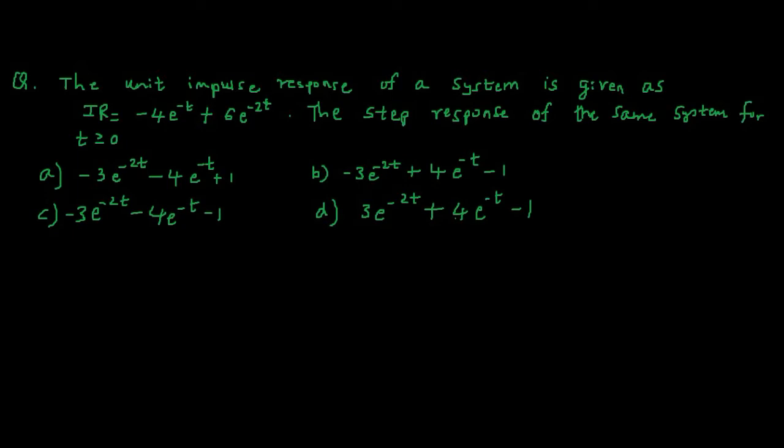The question is: the unit impulse response of a system is given as h(t) = minus 4 e raised to minus t plus 6 times e raised to minus 2t. Then, what is the step response of the same system for time greater than or equal to 0?